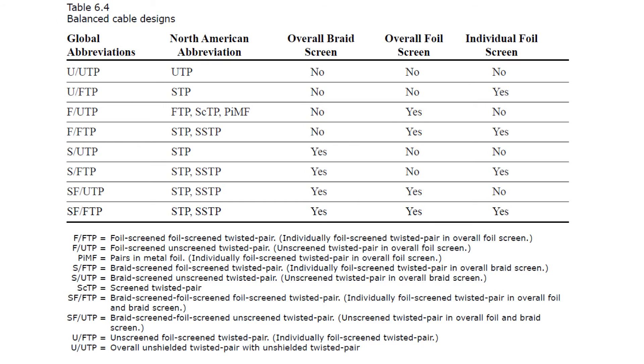But when it comes to ANSI-TIA, there are no clear design designations. Mostly, you'll see UTP for unshielded twisted pair, and SCTP for screened twisted pair. You can refer to Table 6.4 in your TDMM for a comparison of the naming standards between the two organizations.